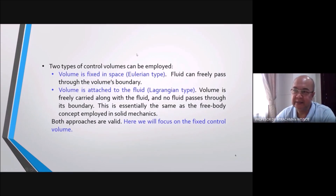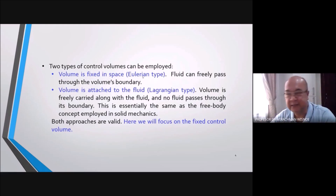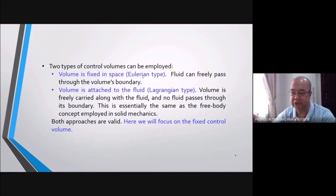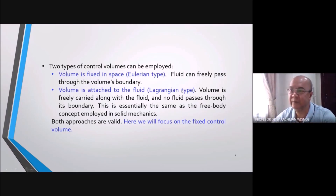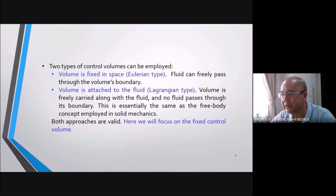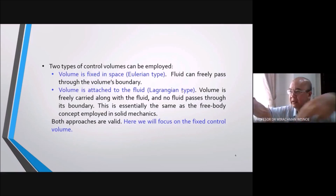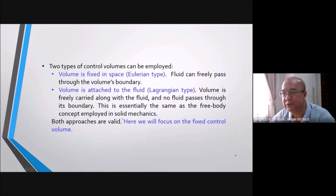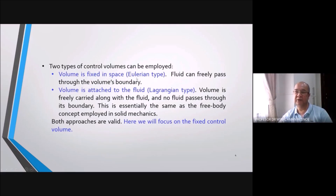In the Eulerian type, drawing a control volume is easy because you fix it above the bridge. In the Lagrangian type, where each car must be followed one by one, the control volume can become very large because it must cover every particle at all times. If one particle goes right and another goes left, the control volume grows very large. Both approaches are valid, but for our case we will focus on the Eulerian type — a fixed control volume.